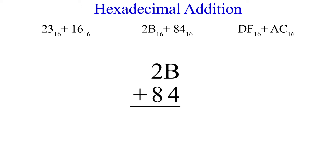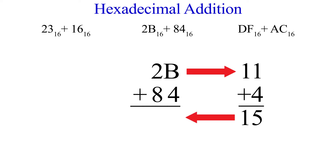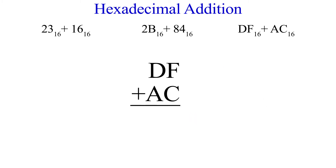Now let's look at 2B plus 84. First we convert B to decimal — that's 11. 11 and 4 make 15, and 15 in hex is F. Then we add 8 plus 2 which is 10, and 10 in hex is A. So the answer to 2B plus 84 is AF.